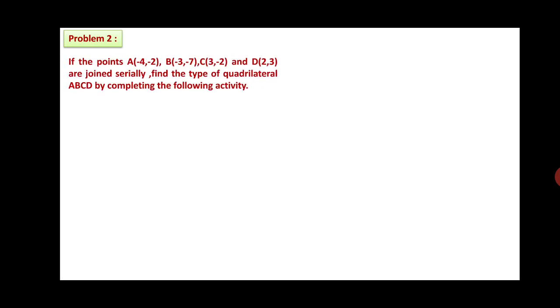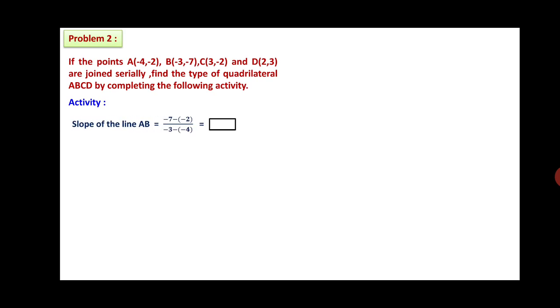Now let us consider one more problem that could be asked for 3 marks — activity based. If the points A(-4, -2), B(-3, -7), C(3, 2), and D(2, 3) are joined serially, find the type of the quadrilateral ABCD by completing the following activity. The activity gives: slope of AB equals (-7 minus (-2)) divided by (-3 minus (-4)); slope of BC equals (-2 minus (-7)) divided by (3 minus (-3)); slope of CD equals (3 minus (-2)) divided by (2 minus 3); slope of AD equals (3 minus (-2)) divided by (2 minus (-4)). Write the answers in the boxes.